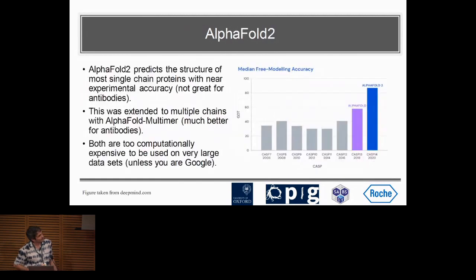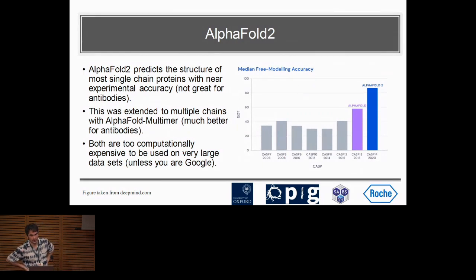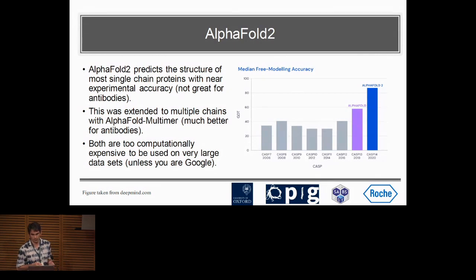Something that's happened relatively recently — everyone knows about it — is that AlphaFold 2 came out. AlphaFold 2 can predict the structure of almost any protein very accurately. It's not great for antibodies, but AlphaFold-Multimer is, because antibodies have two chains, and AlphaFold-Multimer is basically state of the art for antibodies.